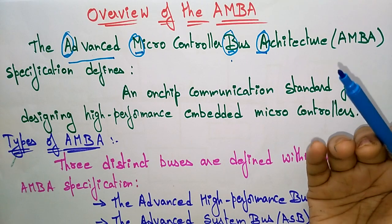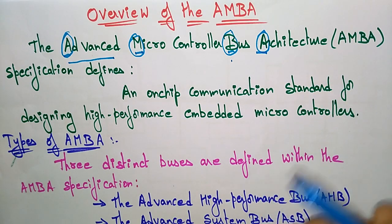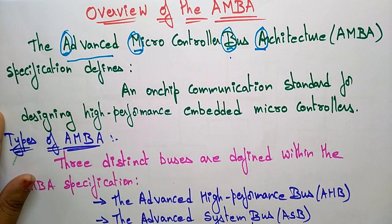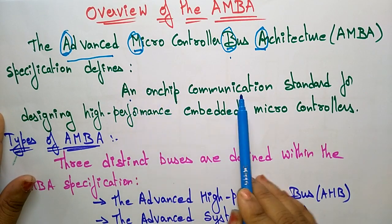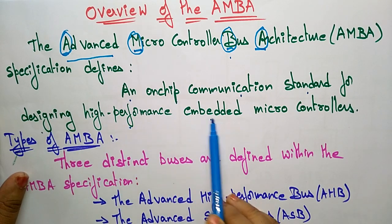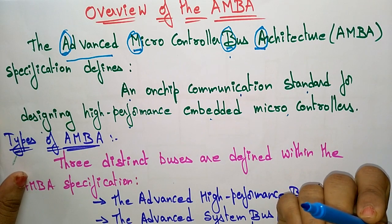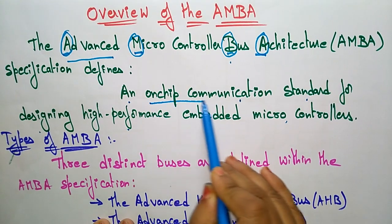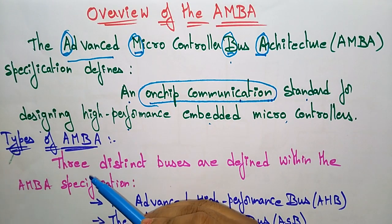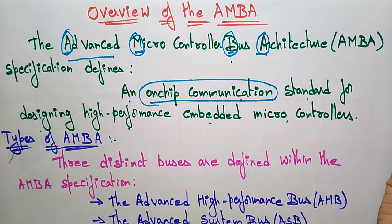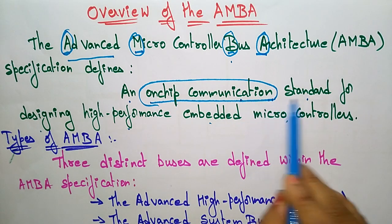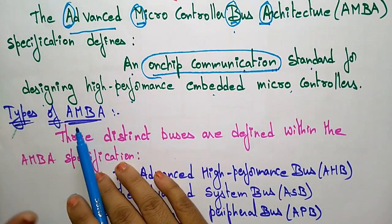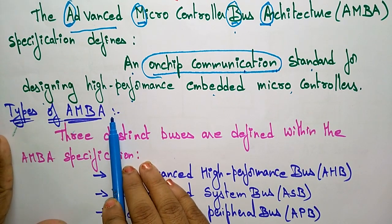Advanced means obviously some advanced features will be extended to the normal bus architecture. The Advanced Microcontroller Bus Architecture specification defines it as an on-chip communication standard for designing high-performance embedded microcontrollers. The main advanced feature is that rather than connecting external buses, it is an on-chip communication — so within the chip itself we have communication.